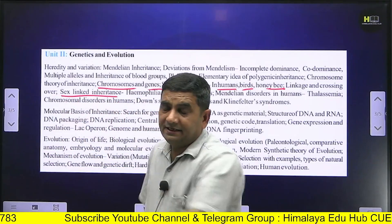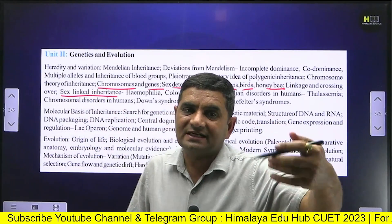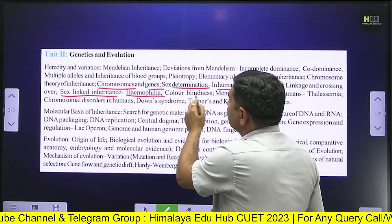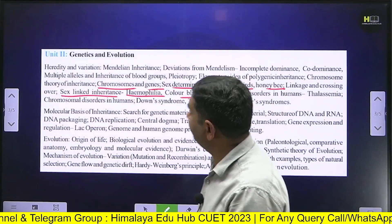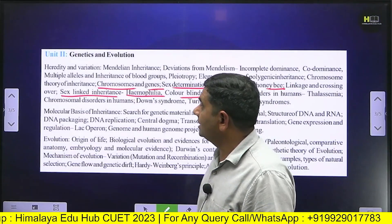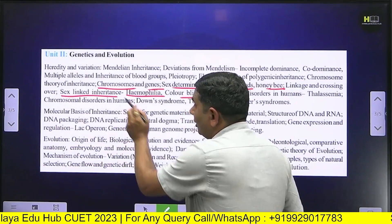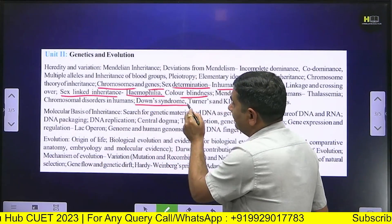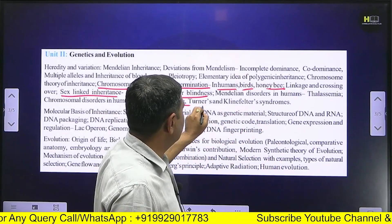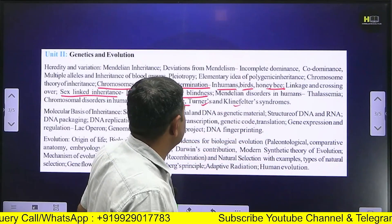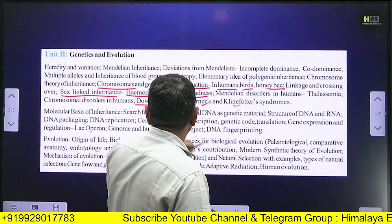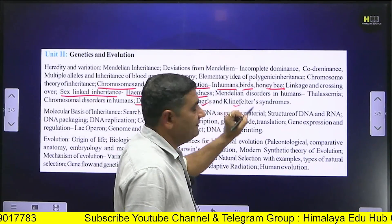We will study sex-linked and autosomal inheritance, including diseases like hemophilia and color blindness. Mendelian disorders such as thalassemia will be covered, along with chromosomal disorders in humans including Turner syndrome and Klinefelter syndrome.